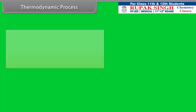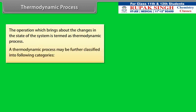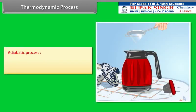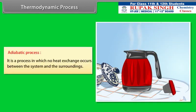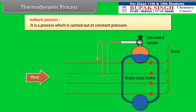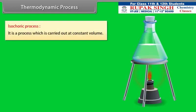The operation which brings about changes in the state of the system is termed a thermodynamic process. Isothermal process: a process carried out at constant temperature. Adiabatic process: a process in which no heat exchange occurs between the system and the surroundings. Isobaric process: a process carried out at constant pressure. Isochoric process: a process carried out at constant volume.